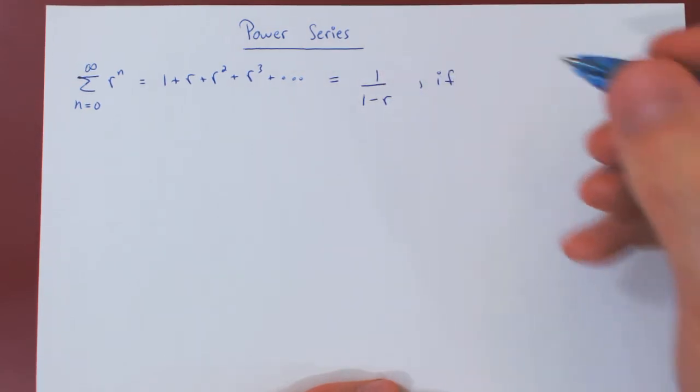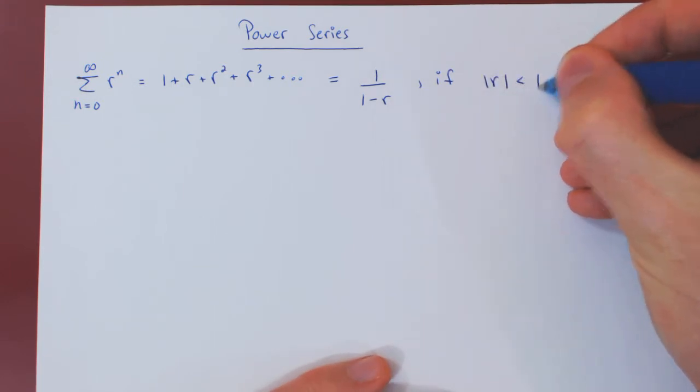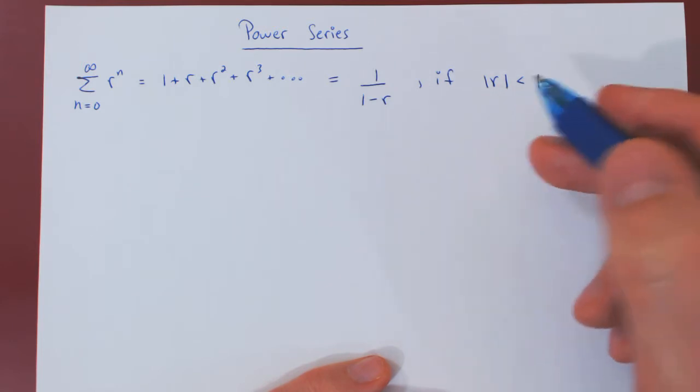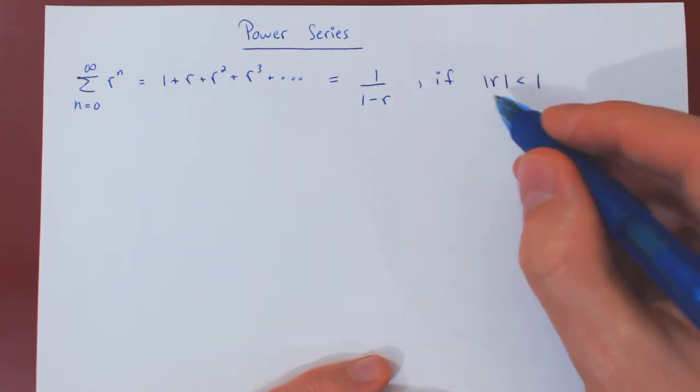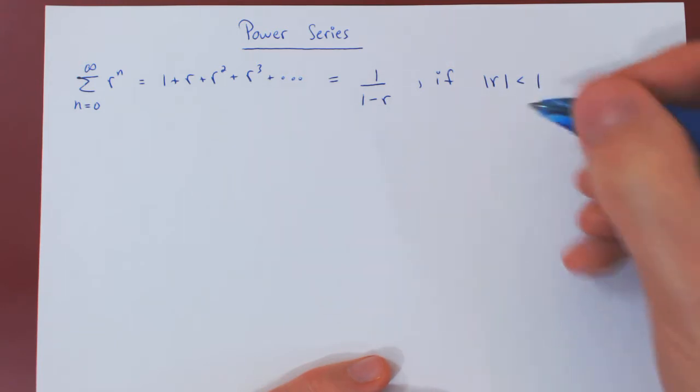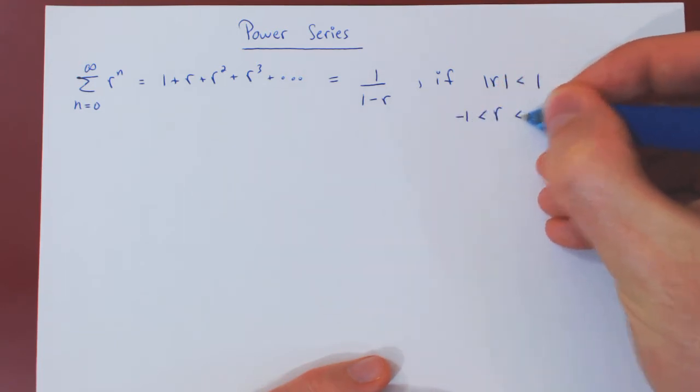But again, only if the absolute value of r is strictly less than 1. And of course, we can say this in a different form. If the absolute value of r is strictly less than 1, then r must lie strictly between negative 1 and 1.